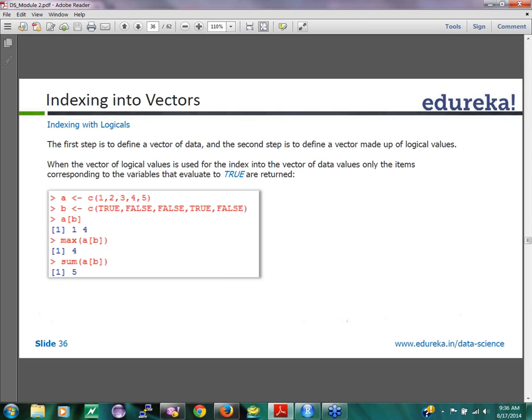The first thing is indexing with logicals. So what you have here is I have an index A which says it is using a value of 1, 2, 3, 4 and 5. It has 5 values here. I have an index B which again has 5 values which is true, false, false, true and false.